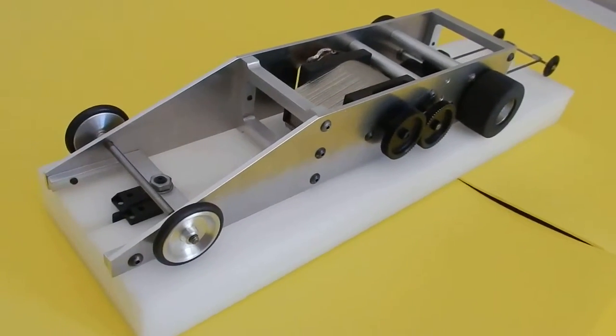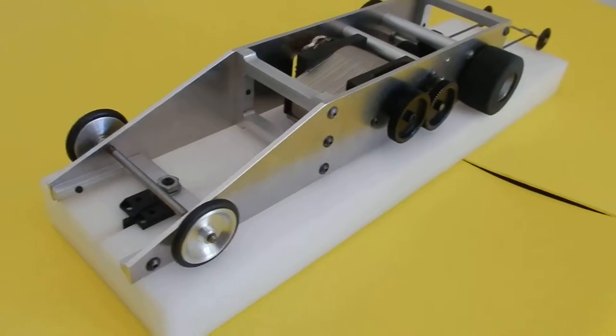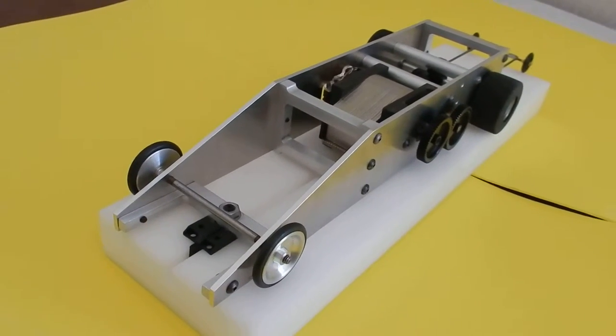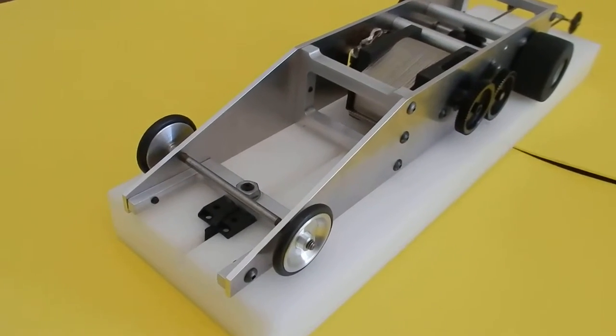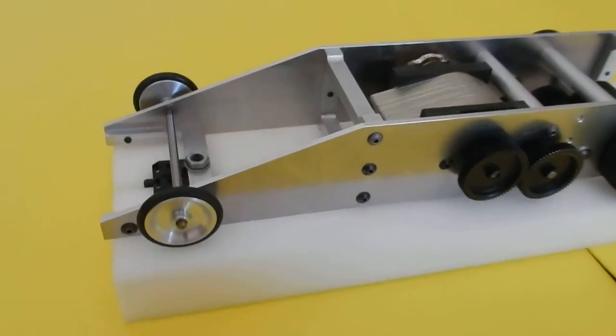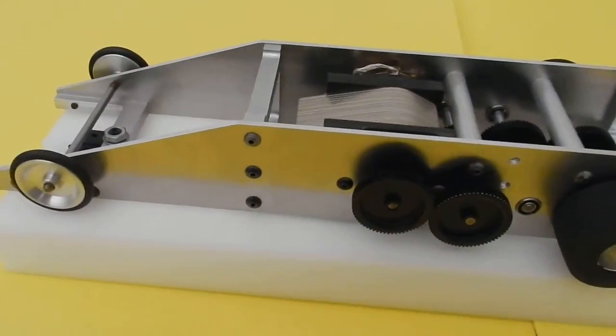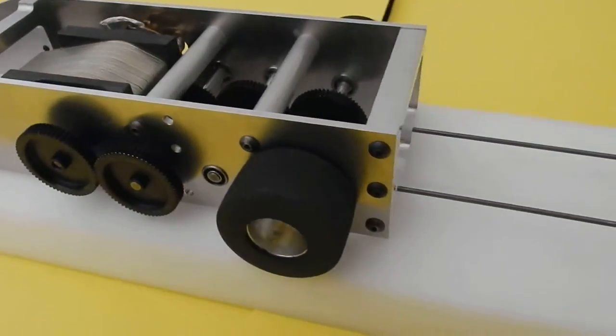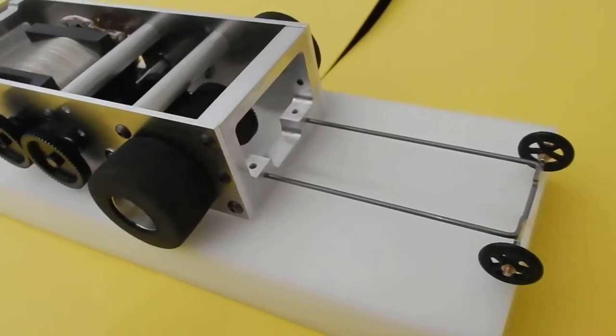Well gang, here's the Fireball 95B Dragster project. Almost done. Got to wire it up and trim the back tires. They're a little too wide right now.